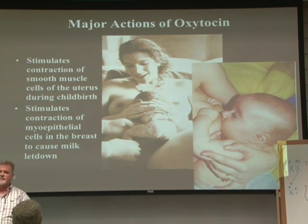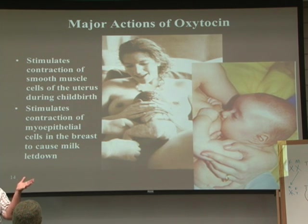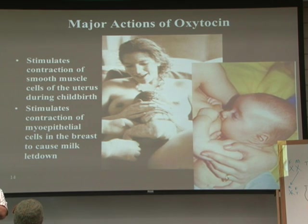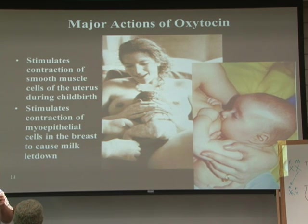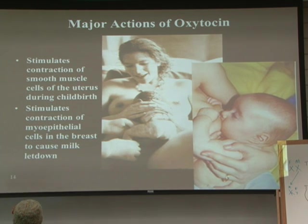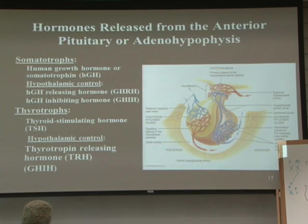There's even an auditory reflex: if mom hears a baby crying, it can begin oxytocin production and milk letdown. So if a breastfeeding mother is out to dinner and a baby cries at a nearby table, she can experience milk letdown unexpectedly — you always have to go prepared because you can get wet. There's a little auditory response to that as well.